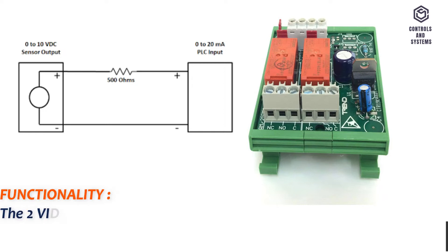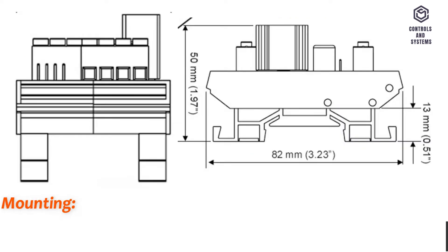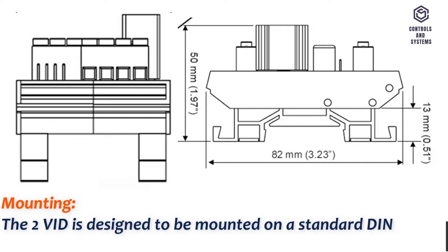Functionality: The 2VID converts two 0 to 10 volt voltage channels into two 0 to 20 milliamp current channels. Mounting: The 2VID is designed to be mounted on a standard DIN rail.